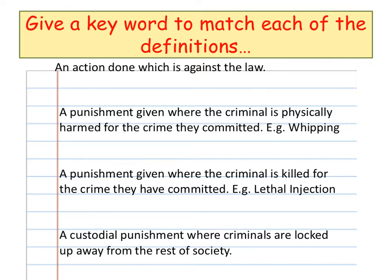The first one is an action done which is against the law. Number two: a punishment given where the criminal is physically harmed for the crime they committed, for example whipping.